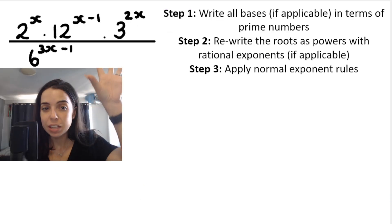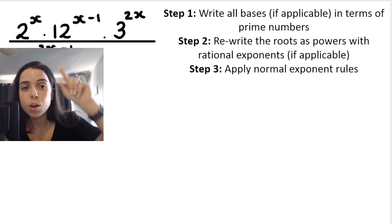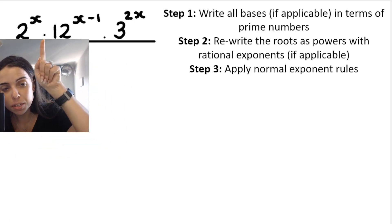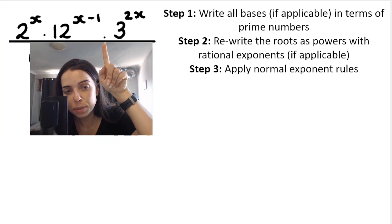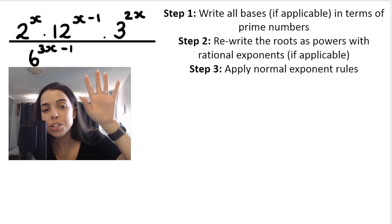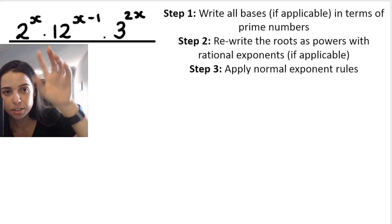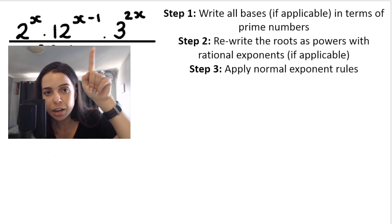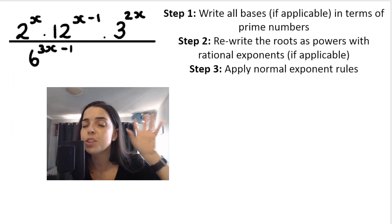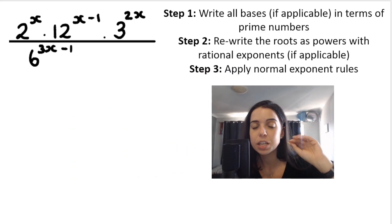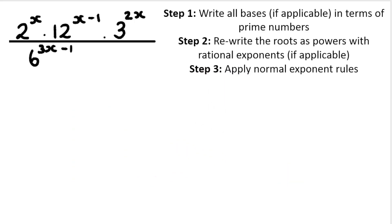First things first, over here we can see that we are just multiplying. There's multiplication, multiplication, no addition, no subtraction. Of course, I'm not talking about in the exponents, I mean over here. So we know we don't need to do anything like factorize. Here's our steps. Our first step says: write all bases, if applicable, in terms of prime numbers or their prime bases.